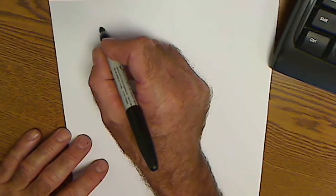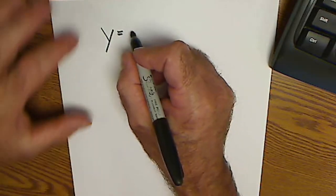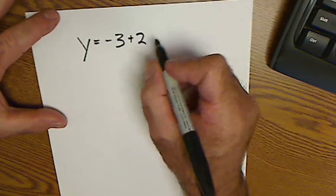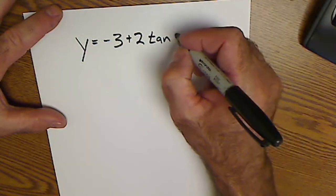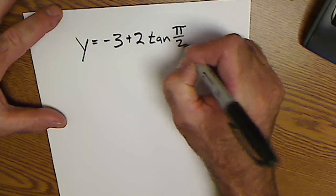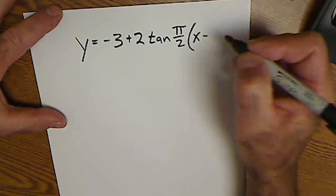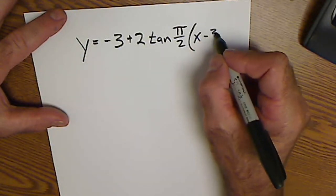Let me try a tangent graph in radians now. Let's say y equals negative 3 plus 2 tangent pi over 2 times (x minus 3), because I'm in radians.